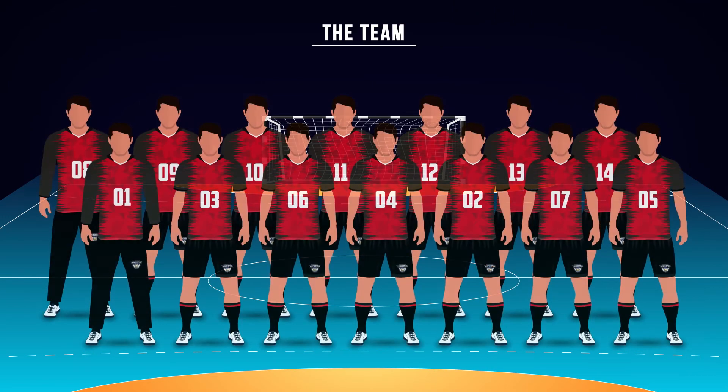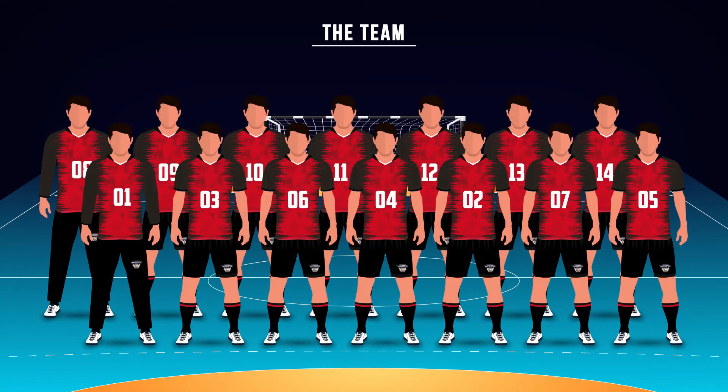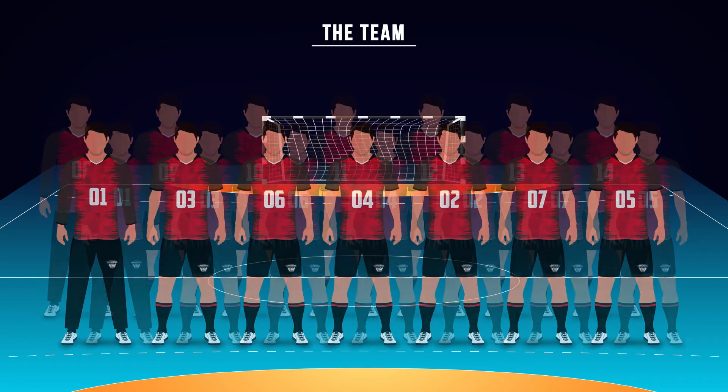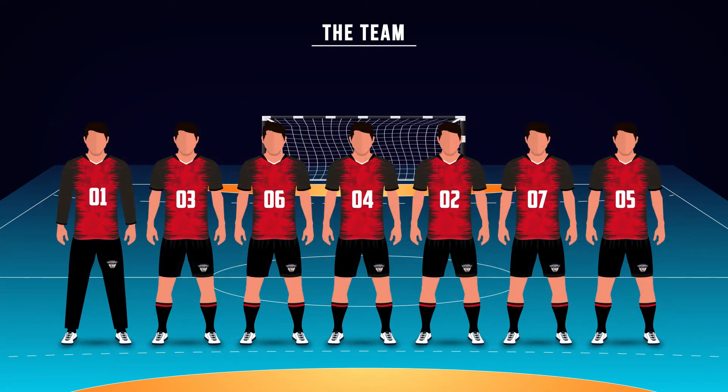A team consists of 14 players. No more than seven players may be present on the court at the same time.